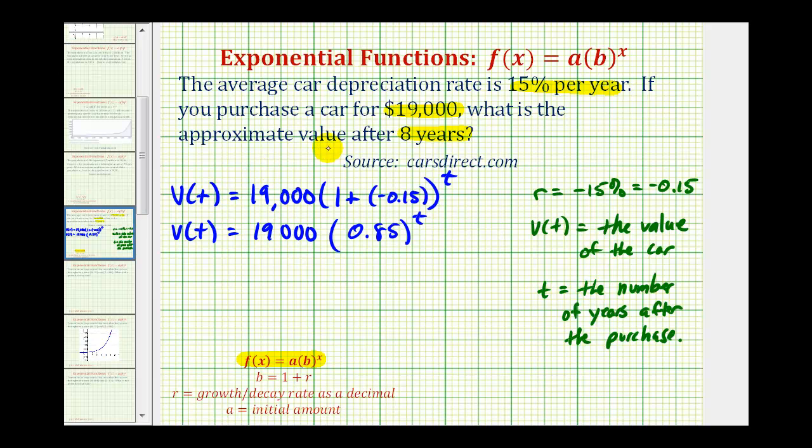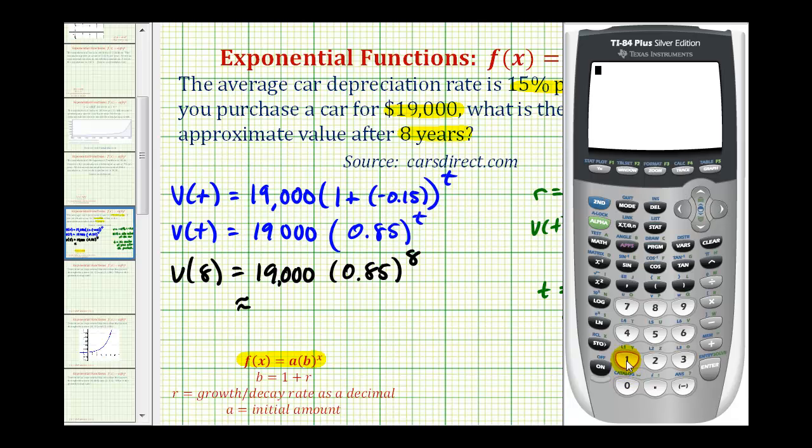So to determine the approximate value after eight years, we need to determine the value of v(8). Now we'll go to the calculator. So we have 19,000 times 0.85 raised to the power of 8.